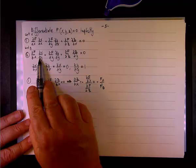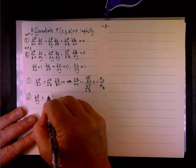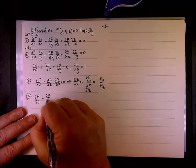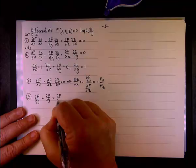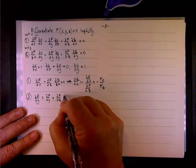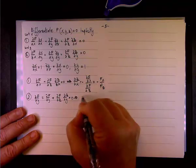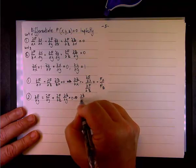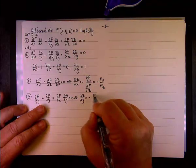And two, ∂f/∂y, if you look at the second one, this is zero, this is one, okay? So, what we have left is ∂f/∂y plus ∂f/∂z ∂z/∂y equals zero.